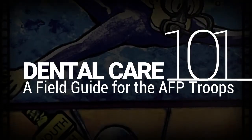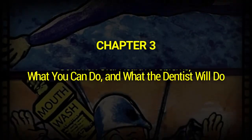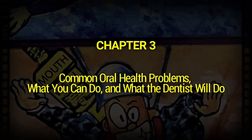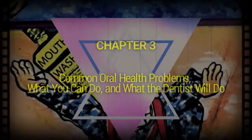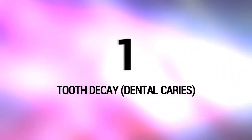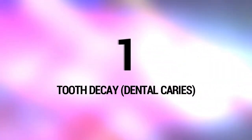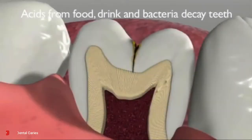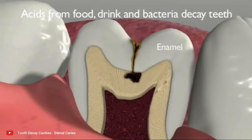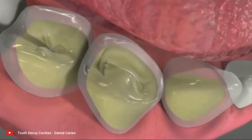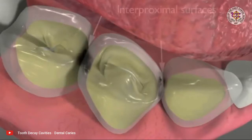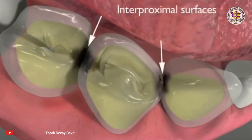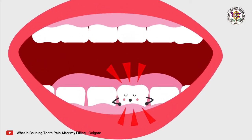Chapter 3: Common oral health problems — what you can do and what the dentist will do. Tooth decay, or dental caries, are cavities — holes in teeth made by infection. If you have a black spot on your tooth, it might be a cavity. If that tooth hurts some of the time, such as when you eat or drink, it probably has a cavity.